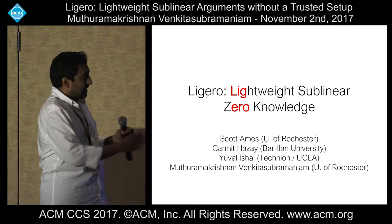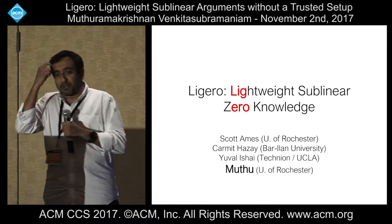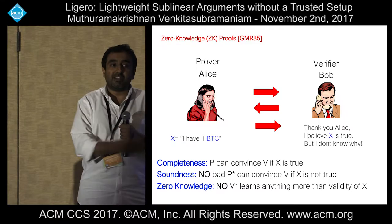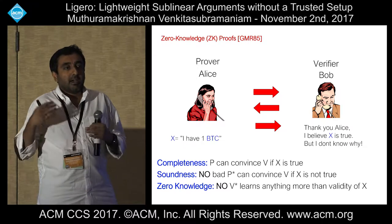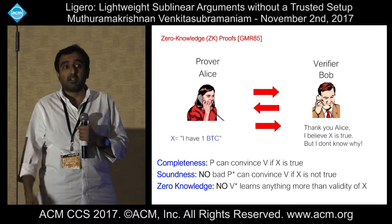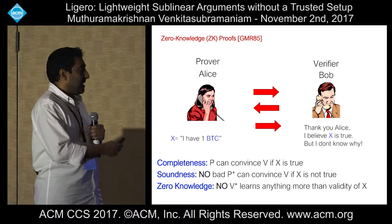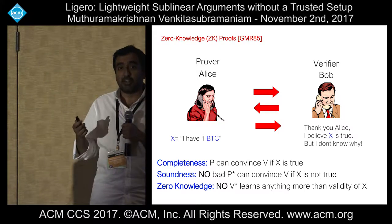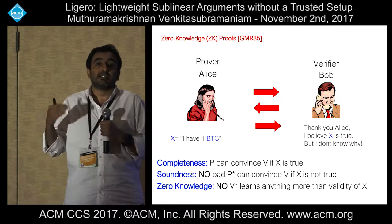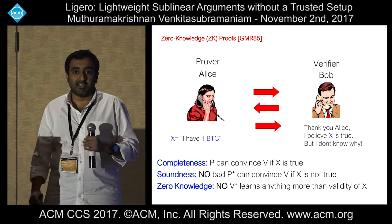This talk is about zero-knowledge proofs. Zero-knowledge proof helps one entity called the prover to convince a verifier of the validity of a statement and nothing more. Relevant to blockchains these days, we know there are cryptocurrencies such as Zcash that employ zero-knowledge proofs. You create a proof system and argue completeness, which says there is a mechanism for a prover to convince a true statement to a verifier. No bad prover should be able to convince a verifier of a false statement. And the interesting property of zero-knowledge says that your proof carries nothing more than the validity of the statement, formalized by a simulation paradigm.